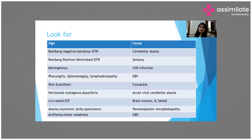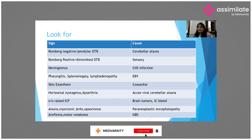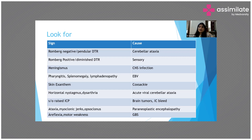Certain clinical examination signs suggest the etiology. Pendular knee jerks and negative Romberg sign indicate cerebellar ataxia. Positive Romberg sign with diminished deep tendon reflexes indicates sensory ataxia. Meningeal signs — positive Kernig's and Brudzinski's signs with neck rigidity — suggest CNS infections.